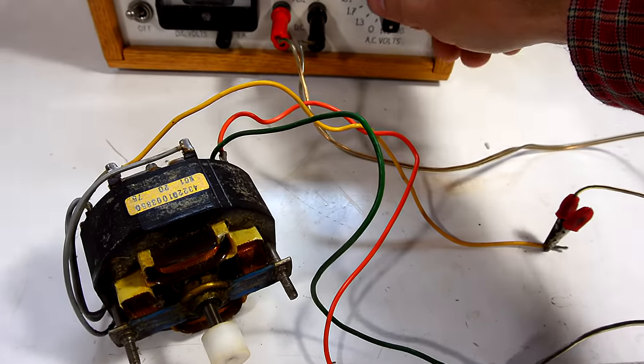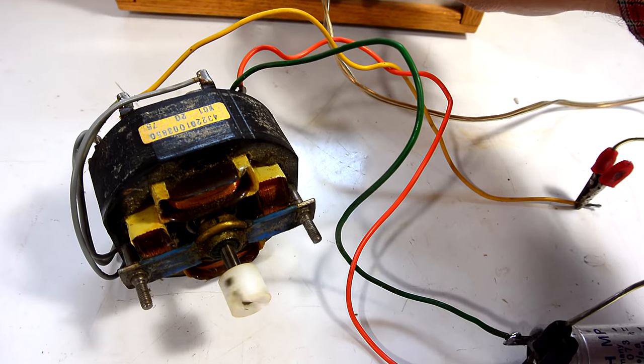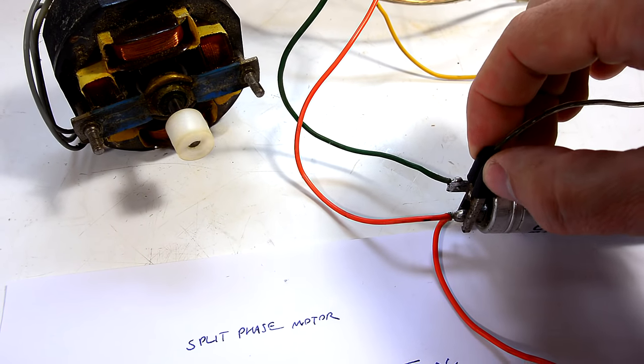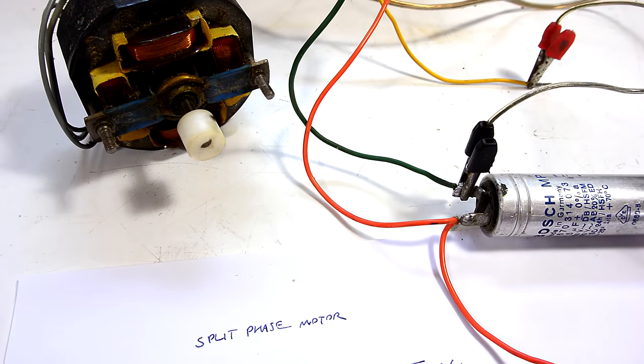This becomes much easier to see if I slow down the motor a lot by reducing the voltage. You can see now it goes counterclockwise and now I move this clip and now it's clockwise.